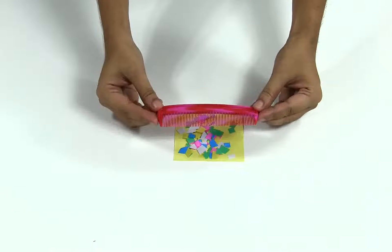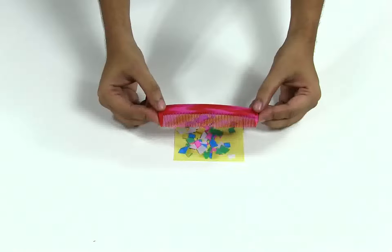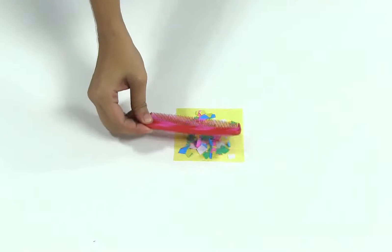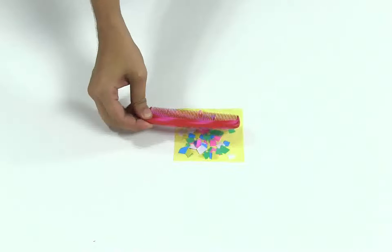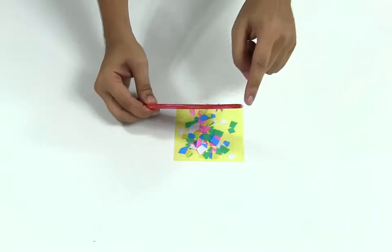Now we shall charge it. For charging the comb, run it through your hair a few times. The drier your hair, the better the result. See, the comb is attracting the paper pieces now. When you run this comb through your hair, this comb accumulates electrons.